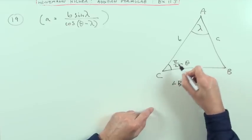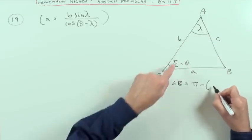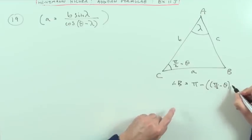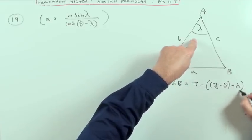It'll be 180 minus the sum of those two, so it'll be pi minus the sum of those two. That's pi upon 2 minus theta plus lambda.